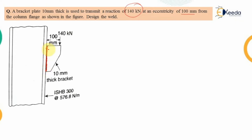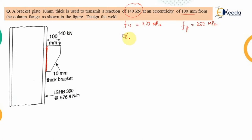This welding can be made with two methods: either butt welding, also known as groove welding, or fillet welding. First we write down the data. The grade of steel, if not mentioned, is taken as 410 MPa. The corresponding yield strength is 250 MPa. The partial factor of safety, if not mentioned, is taken as 1.25 for workshop welding, while the partial factor of safety for the steel element is 1.10.